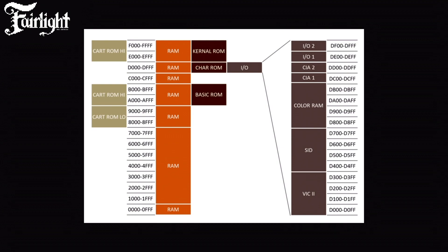The C64 has a 16-bit wide address bus, which means it can address 65,536 addresses. This is what we know as 64K, because every K is 1024 in decimal, so 64K turns out to be 65,536. It also has a data bus that is 8 bits wide — that's why it's called an 8-bit computer — meaning at every address there is an 8-bit piece of information, a byte. That's why the C64 is said to have 64 kilobytes of memory.